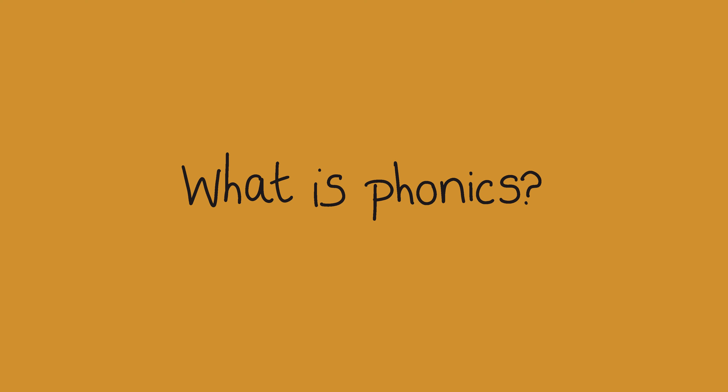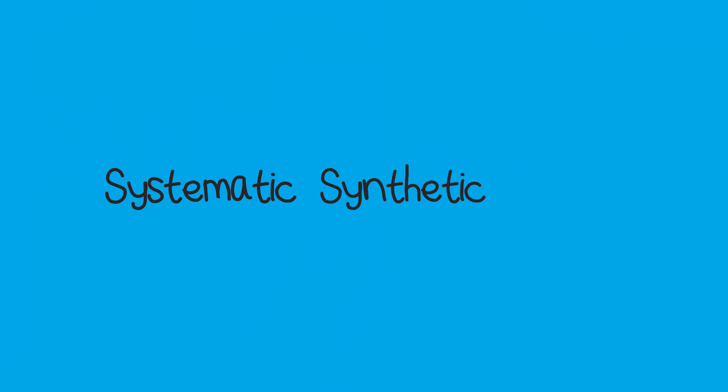So what is phonics? Phonics is the method we use to teach children how to read by matching the letter sound, or phoneme, to the way the letter looks — the written letter, or grapheme. So for example, we have the letter G that makes a G sound, and the letter A that makes an A sound, so when children see the letter written down they know the sound associated with it.